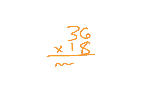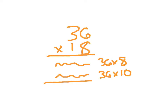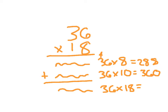Here we have the problem 36 times 18. On that first line, we're going to figure out the product of 36 and 8. On the next line, we'll figure out the product of 36 times 10 — not 1, because that 1 is worth 10. And on the final line, we figure out the product of 36 times 18 by adding those two partial products together.